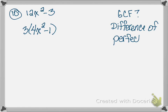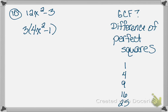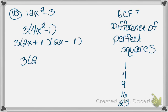The answer is yes — it is a difference of perfect squares. Remember: perfect squares are 1, 4, 9, 16, 25 (i.e., 1², 2², 3², 4², 5²). The square root of 4x squared is 2x, and the square root of 1 is 1. One factor gets a plus, one gets a minus, giving us 3(2x plus 1)(2x minus 1). This only works with a minus sign — it must be a difference of perfect squares.